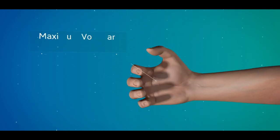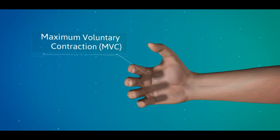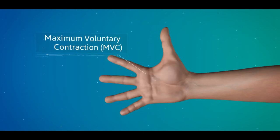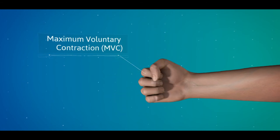Ergonomics is measured by maximum voluntary contraction, MVC, a measurement of muscle effort during repetitive motion over time.